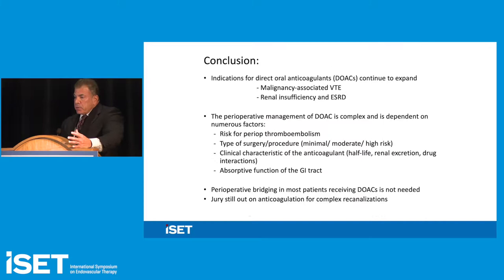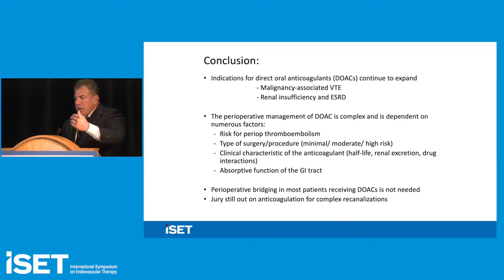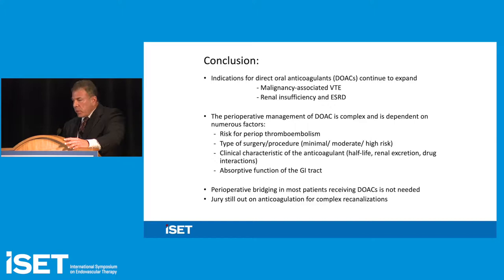In conclusion: the role of DOACs continues to expand, including for cancer patients. Apixaban is being used more for renal failure. Perioperative management is very individualized — it depends on risk and type of procedure. Bridging in general is not needed; I don't bridge and don't stop anticoagulation for venous disease. The jury is still out on complex recanalizations of venous stents and how to anticoagulate them. Thanks.